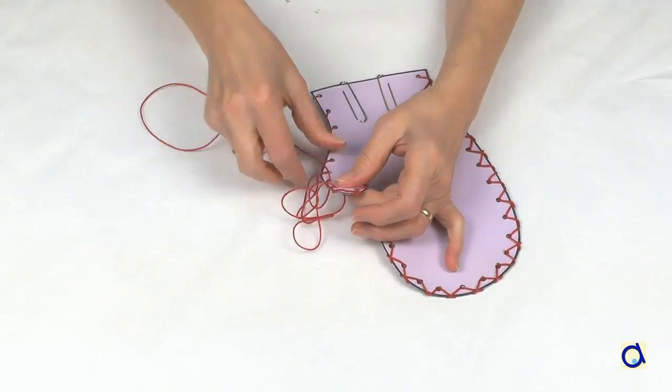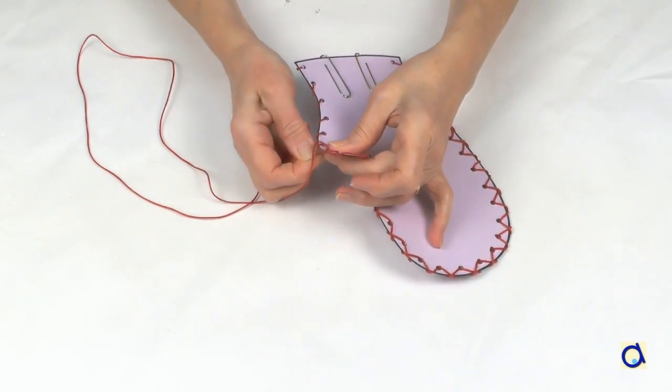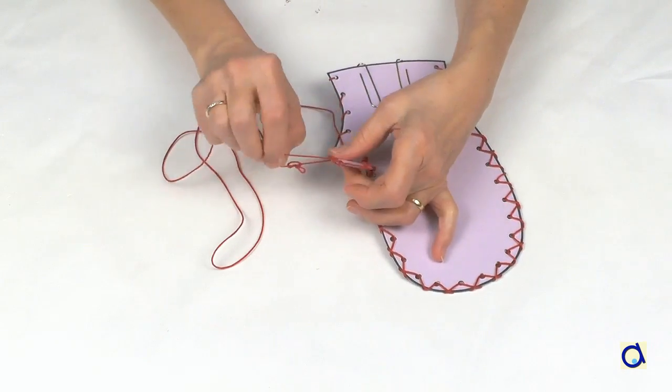A third possibility is to start as in the second example and then come back in the opposite direction. This gives a zigzag effect on the side of the mitten.